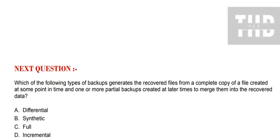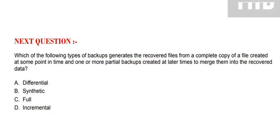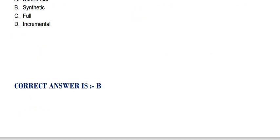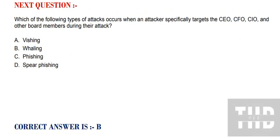Next question: Which of the following types of backups generates the recovered file from a complete copy of a file created at the same point in time, and one or more partial backups created at later times to merge them into the recovered data? Option A: Differential. Option B: Synthetic. Option C: Full. Option D: Incremental. The correct option is Option B.